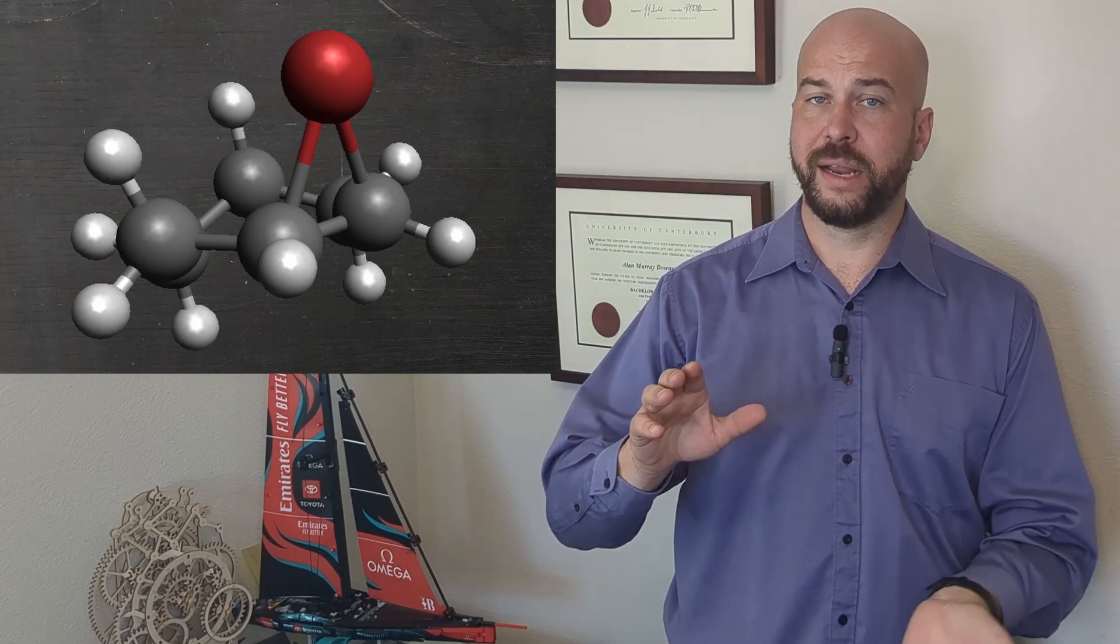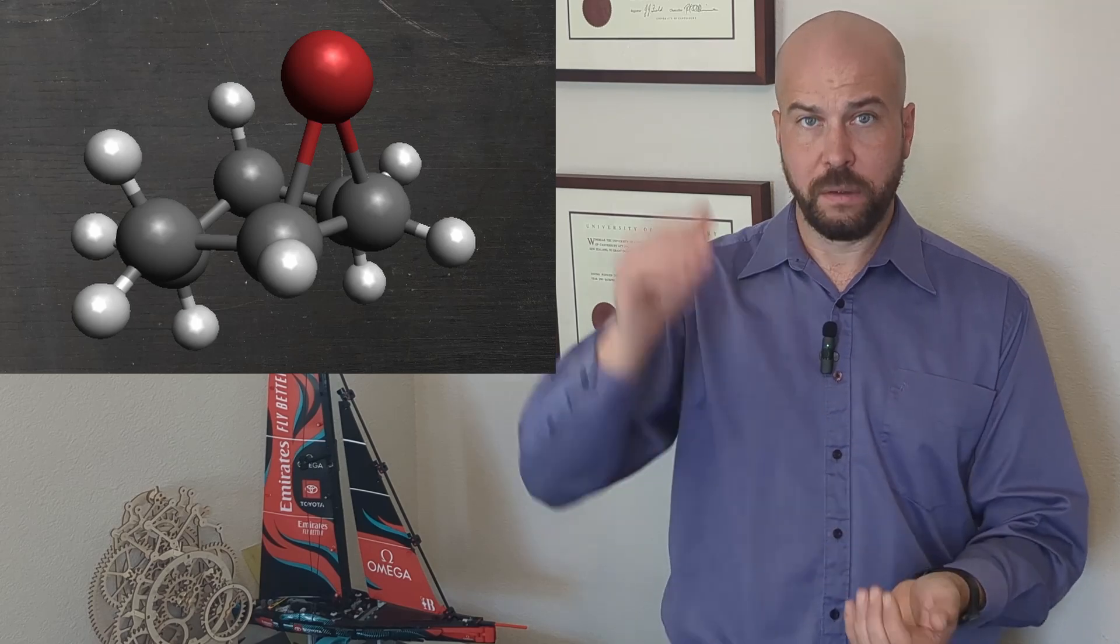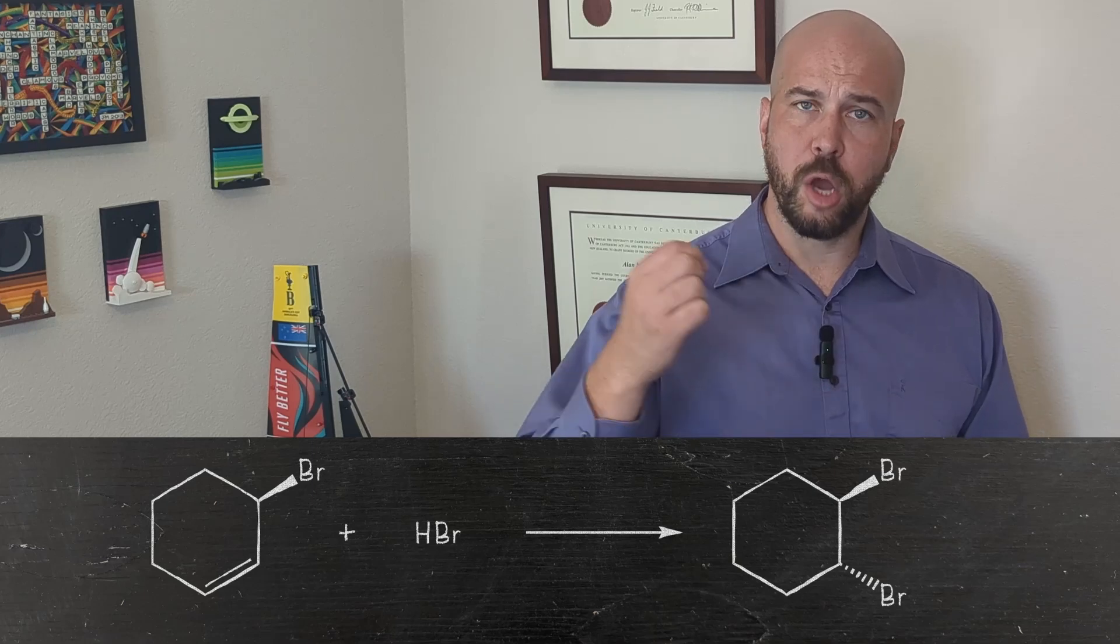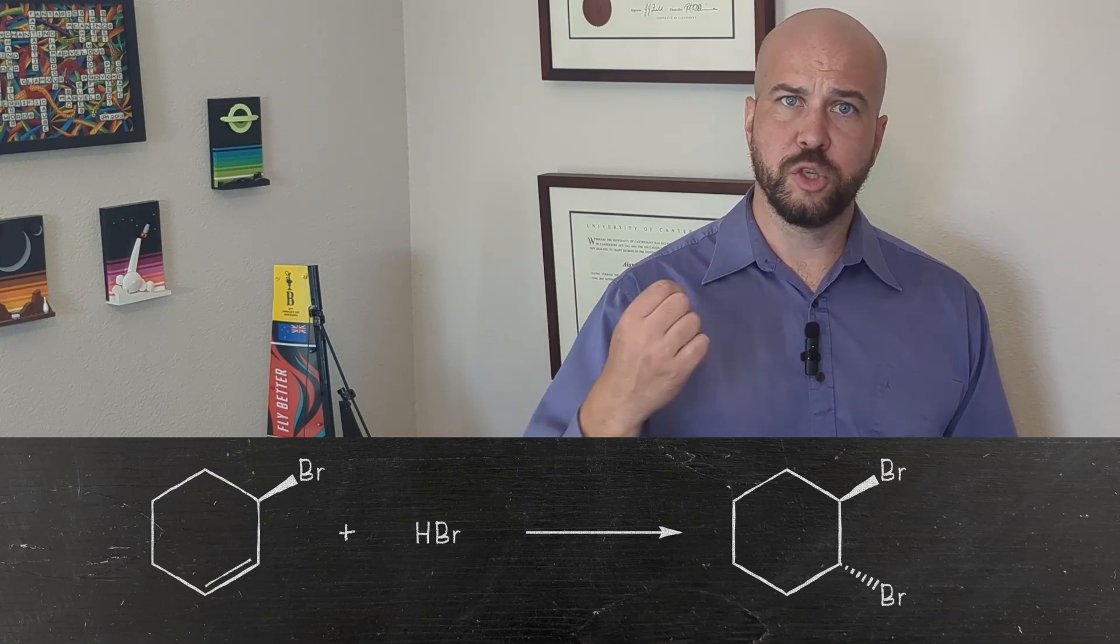This bromonium ion occupies one side of the ring, so when our bromide comes in to attack, it has to do so from the other side, as it is sterically blocked from the bromonium side. This is why when we react an alkene with bromine we only get anti-addition—that is, the bromines coming in on opposite sides, forming the trans isomer.